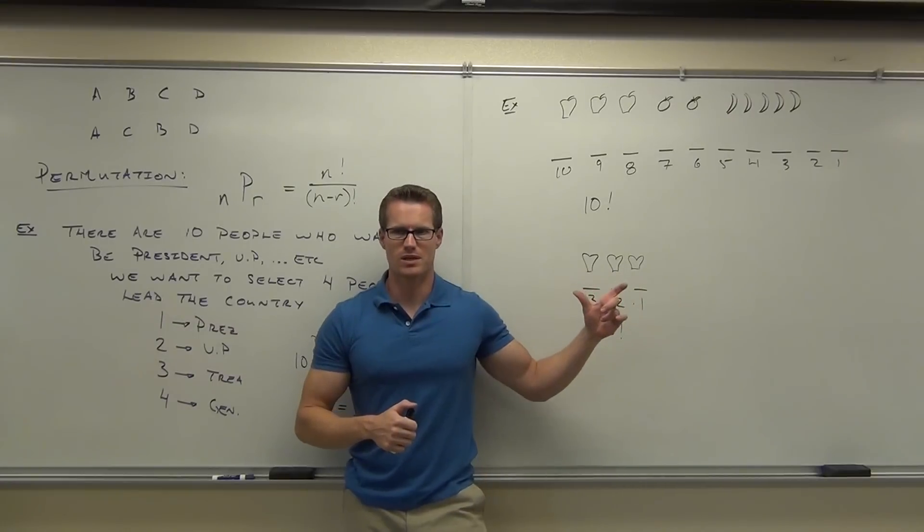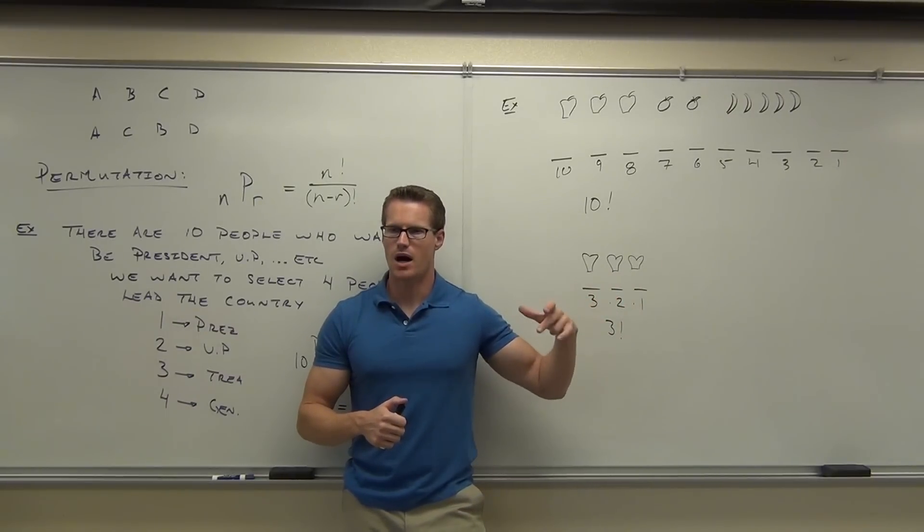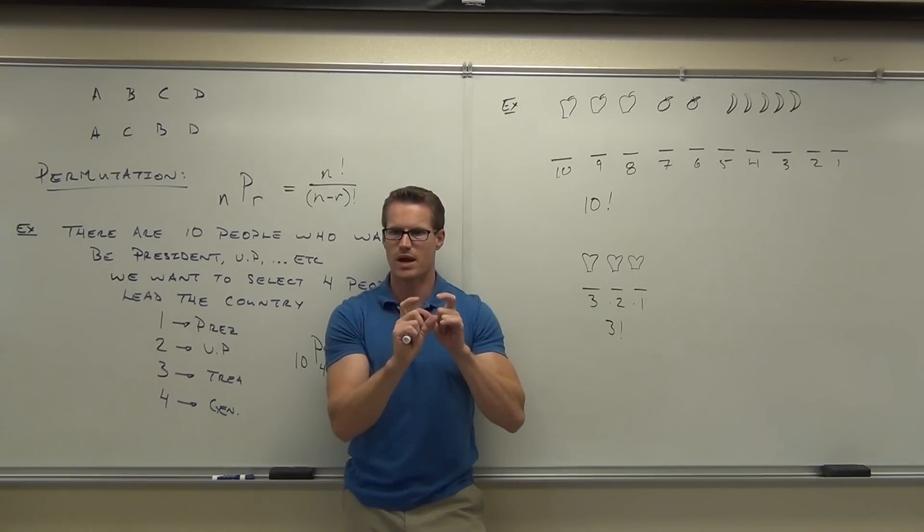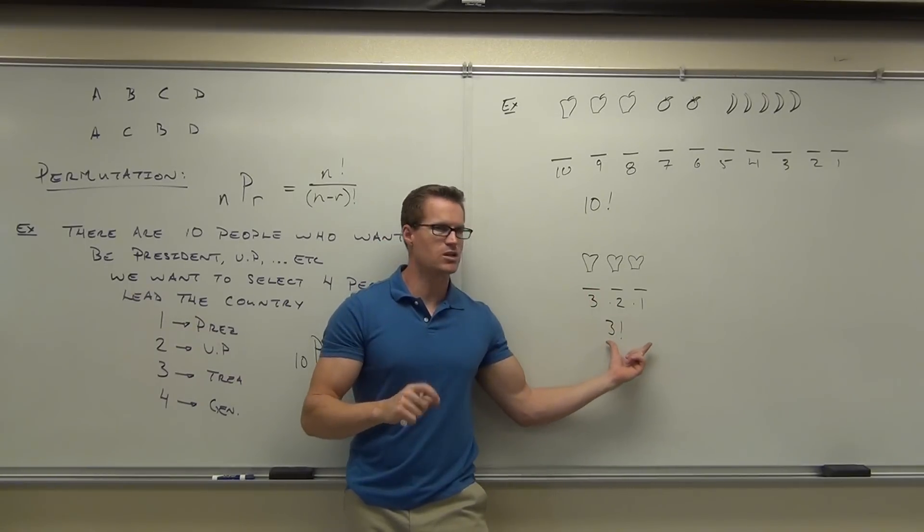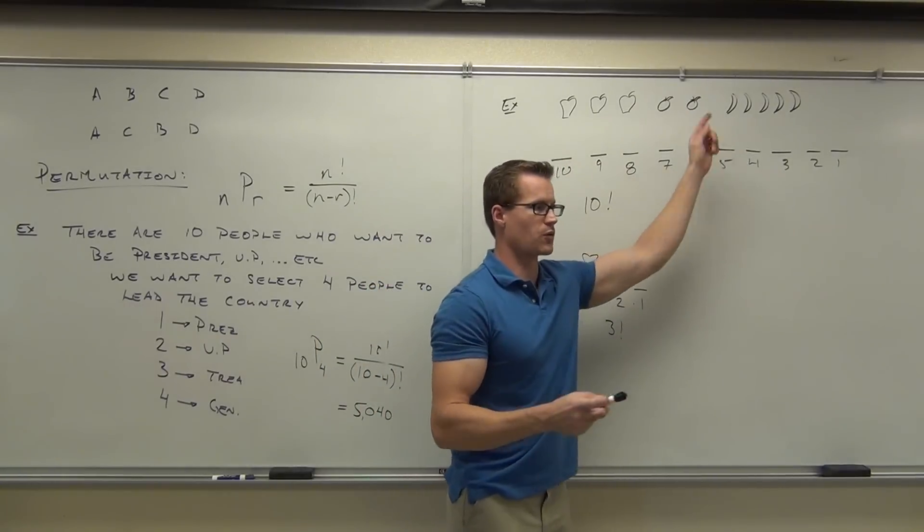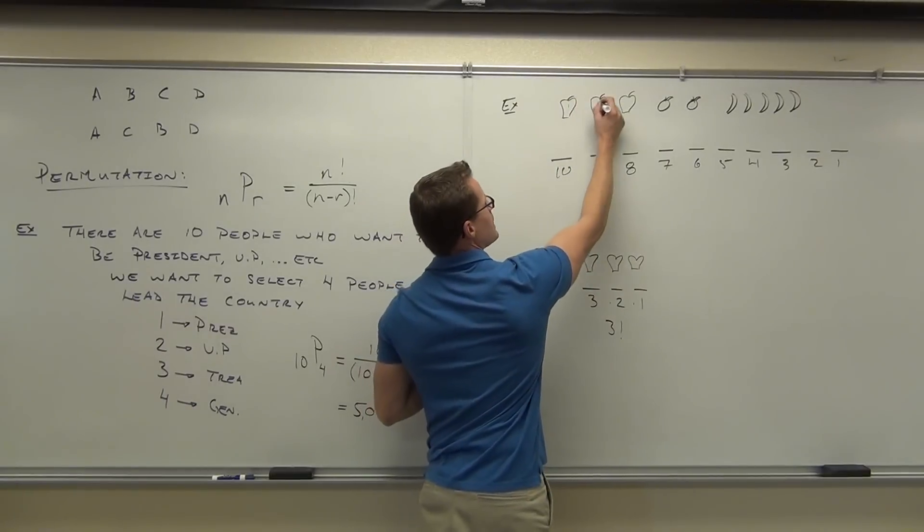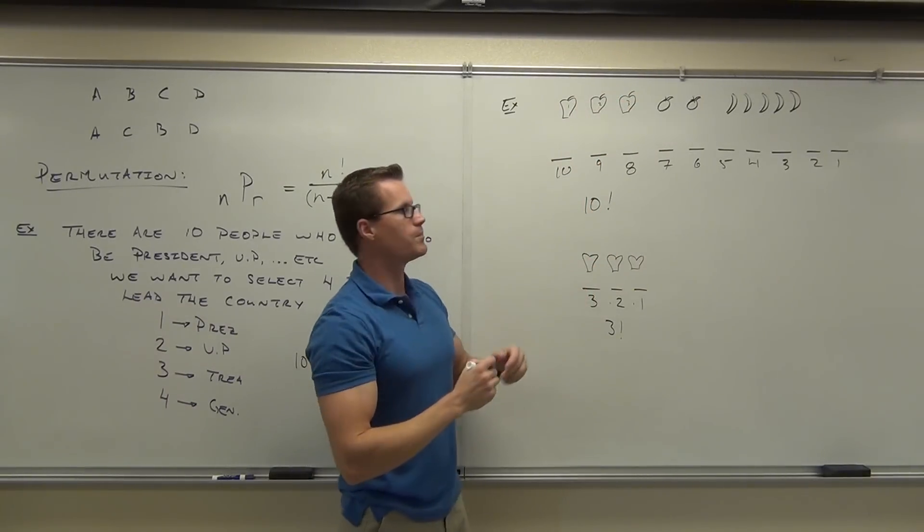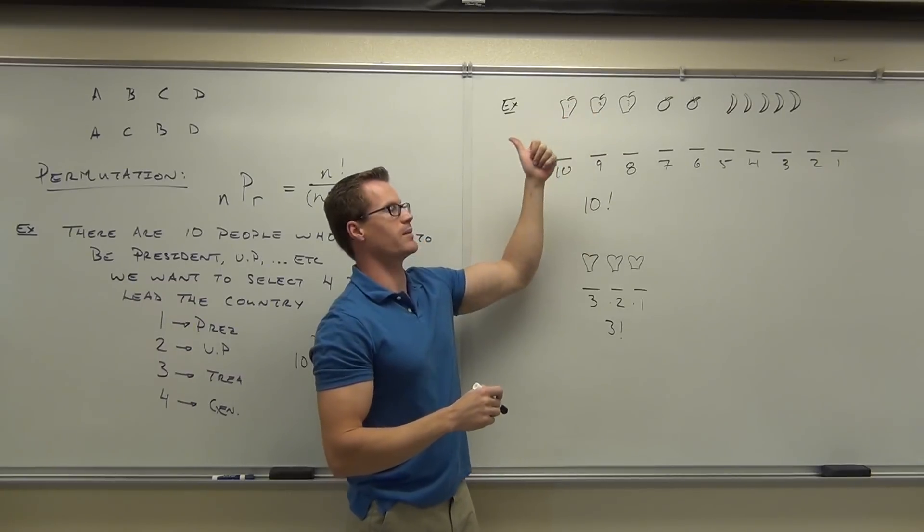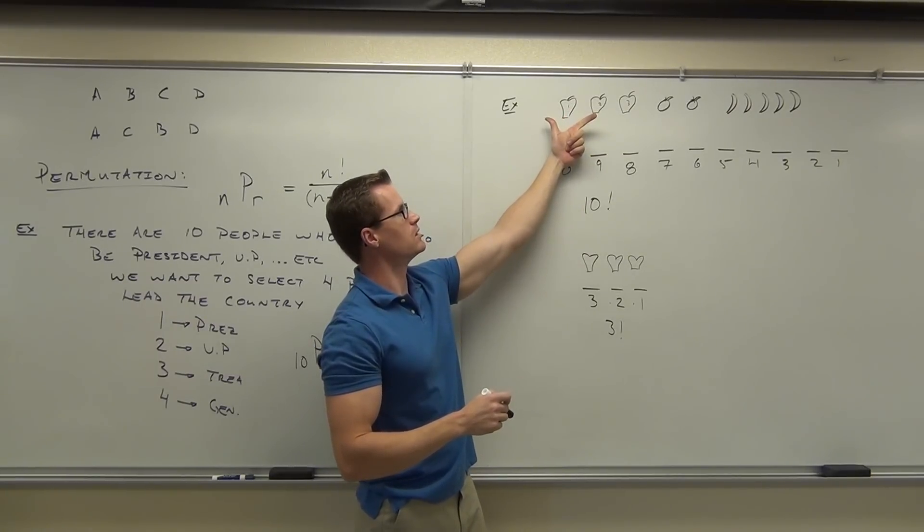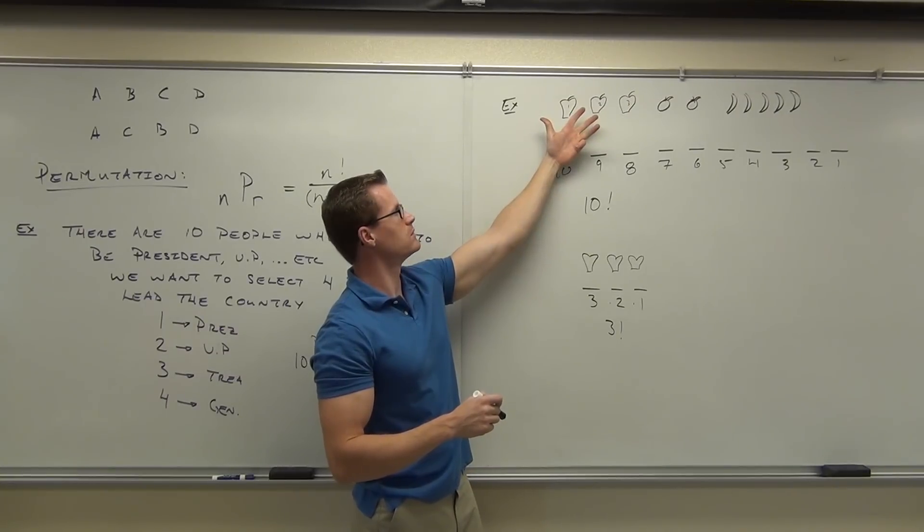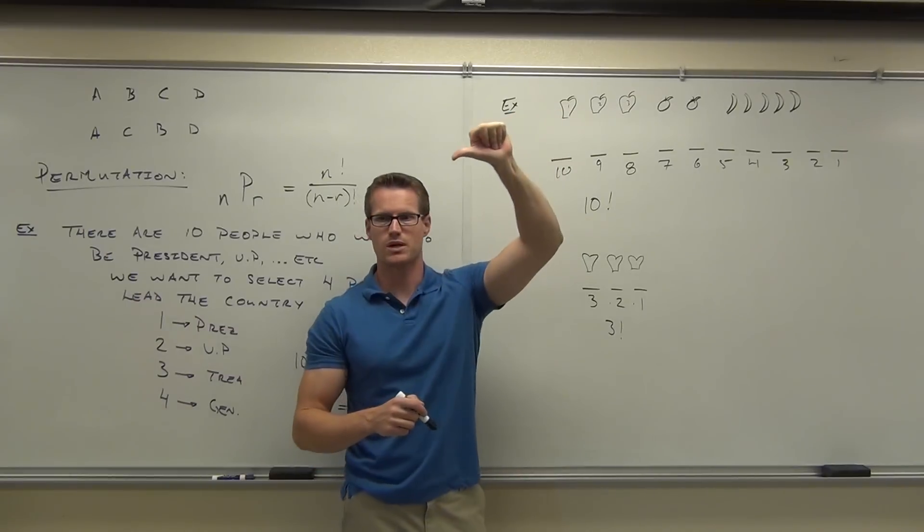Now here's the cool thing about this: this would be the number of arrangements that actually do not change my big picture. Does that make sense to you? So if I change those apples around, there's six ways I can do that, three factorial ways I could do that and not change this picture. For instance, if I labeled this first apple, second apple, third apple, I could do one two three, I can do one three two. Let me do this: one three, one two, three one, three two, two one three, two three one, three two one, three one two. That's six ways I could arrange those.